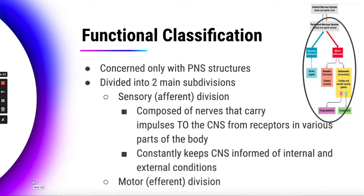For example, if you have a pain receptor in your skin, that's going to carry information to your central nervous system from those receptors. The sensory division is going to constantly keep your central nervous system updated on both internal and external conditions, which is really important so it can respond to those things right away.